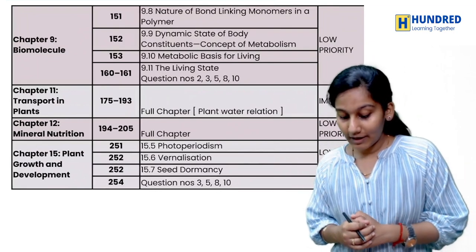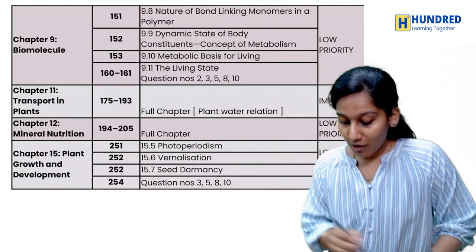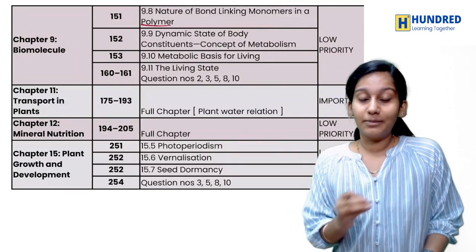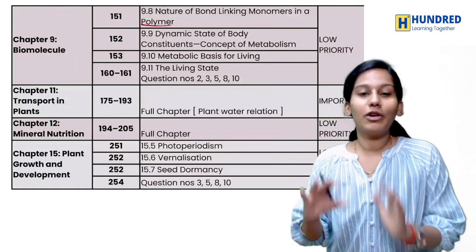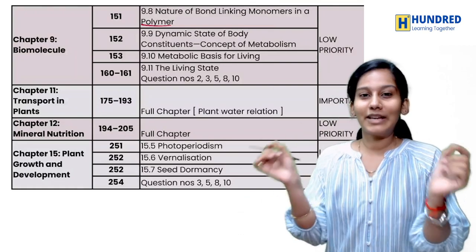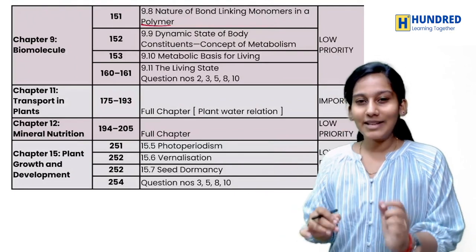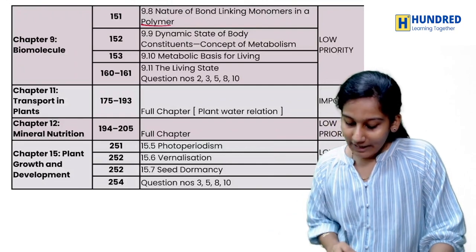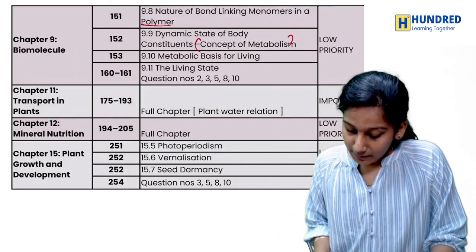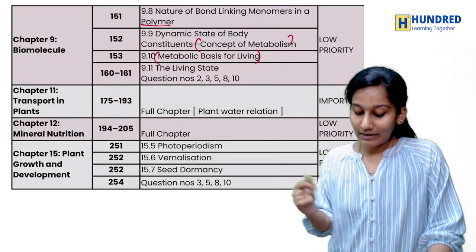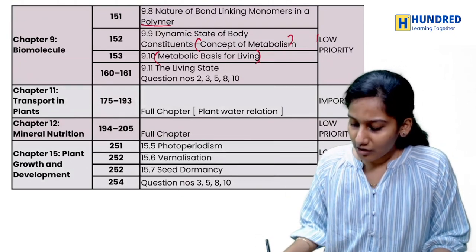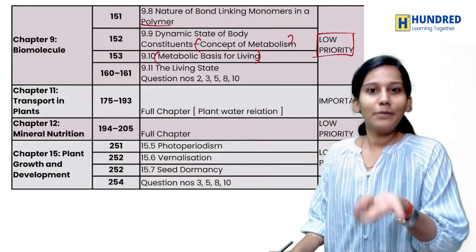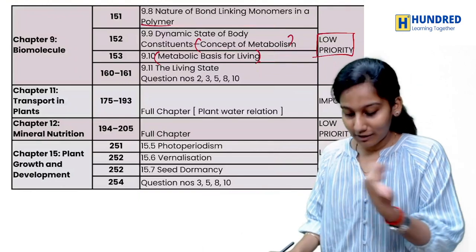Biomolecules chapter: the nature of bonding linking monomers in polymers has been removed, even though it is the base we need to learn for the molecular genetics chapter. The structure of DNA and RNA is there but it is of low importance. Also, the dynamic state — concept of metabolism, metabolic basis for living, and the living state — has been removed and is low priority. Biomolecules is actually easier, and it is also a base for Class 12 standard, but it is okay to remove those portions.